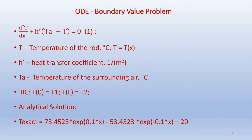The boundary conditions are T at 0 equals T1 and T at L equals T2, and these are also called Dirichlet boundary conditions. The analytical solution is obtained as: T_exact equals 73.4523 times exponential of 0.1x minus 53.4523 times exponential of negative 0.1x plus 20.